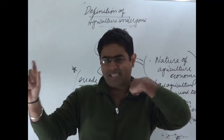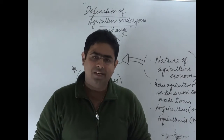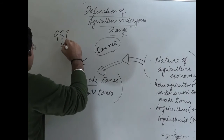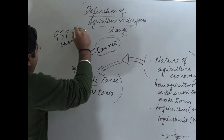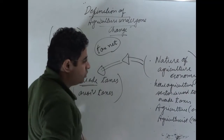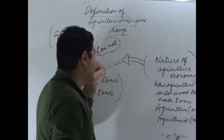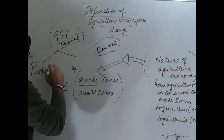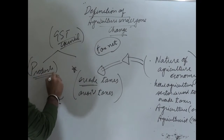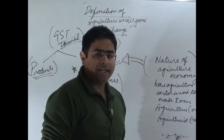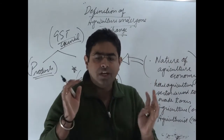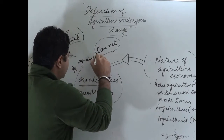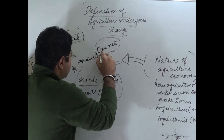Now, in order to address this, the GST Council has brought about a change in the definition of agriculture. This change has brought certain products under the definition of agriculture and has narrowed down the definition of agriculturist.